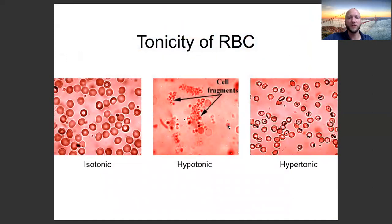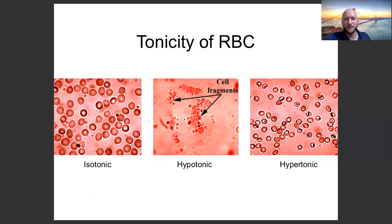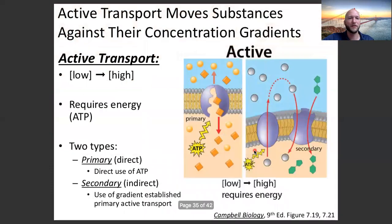Here's what it looks like under the microscope. Isotonic: perfect biconcave, normal-looking red blood cells. Hypotonic: swollen red blood cells — some swell so much they burst and you get cell fragments. Hypertonic: water leaves the cells and you get crenated cells that almost look like Lisa Simpson's spiky hair from The Simpsons. They shrink and shrivel — they crenate.